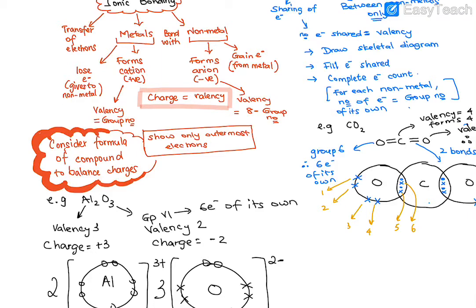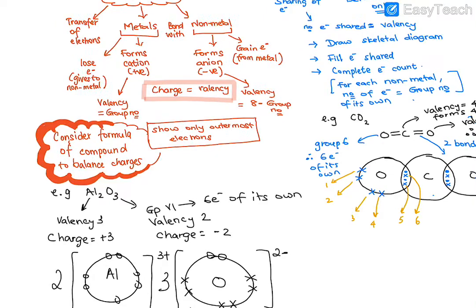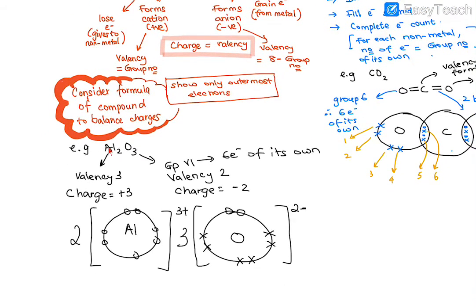For metals, the valency equals the group number. For non-metals, the valency equals eight minus the group number. For example, in aluminium oxide, aluminium is in group 3, so it has valency 3 and will form a charge of 3+.